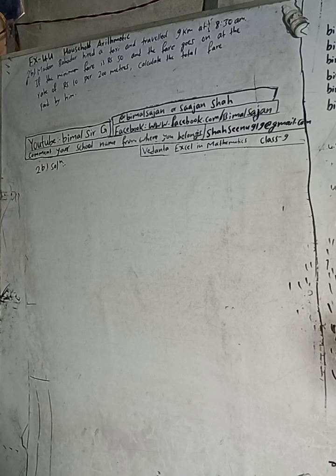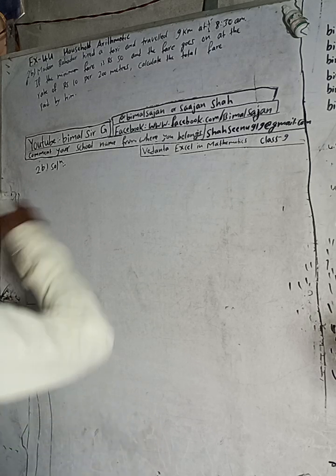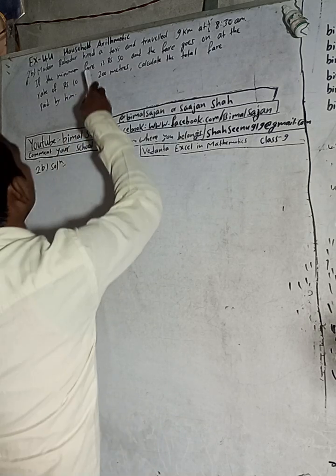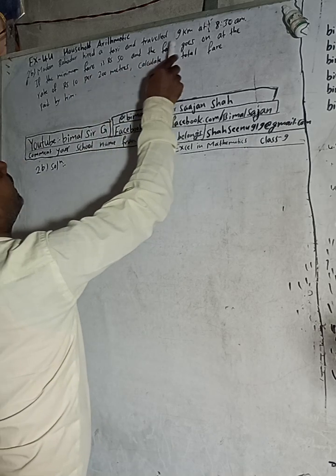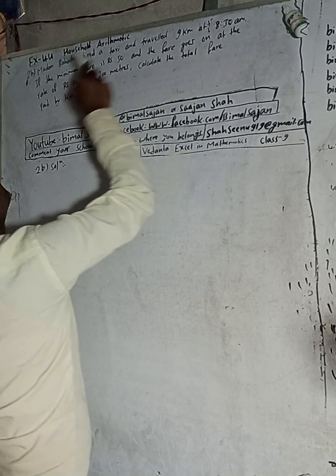Class 9 and 10 students, welcome back to Bimal Sarji's YouTube channel. This is question number 2b, exercise 4.4, topic: household arithmetic, Vedanta Excel in Mathematics class 9. The question is: Madan Bahadur hired a taxi and travelled 9 km at 8:30 a.m.